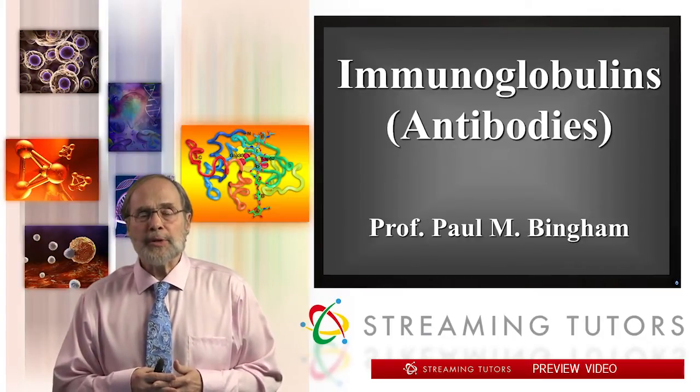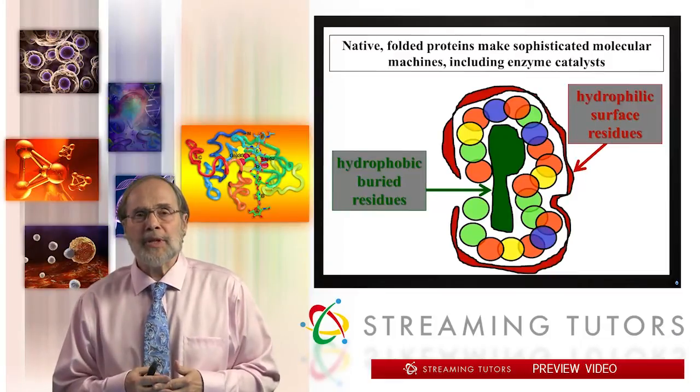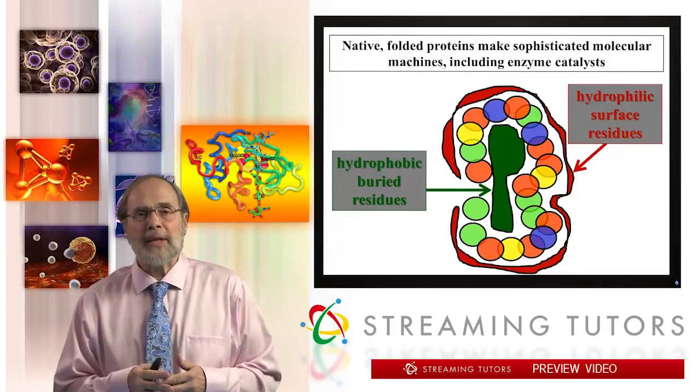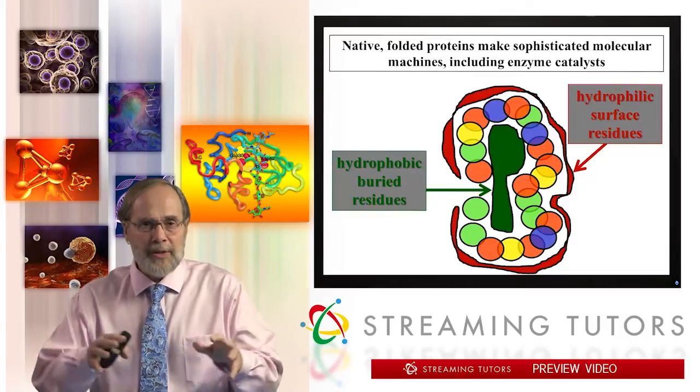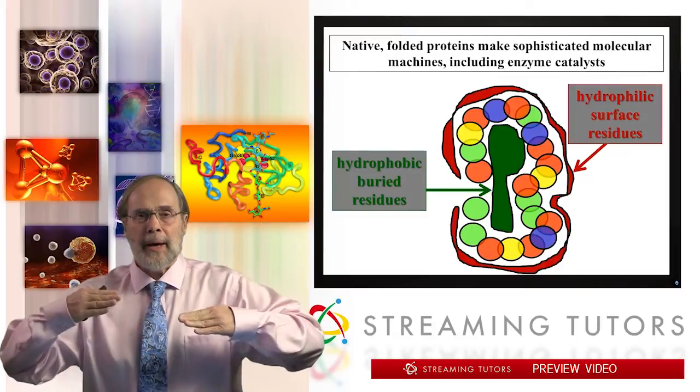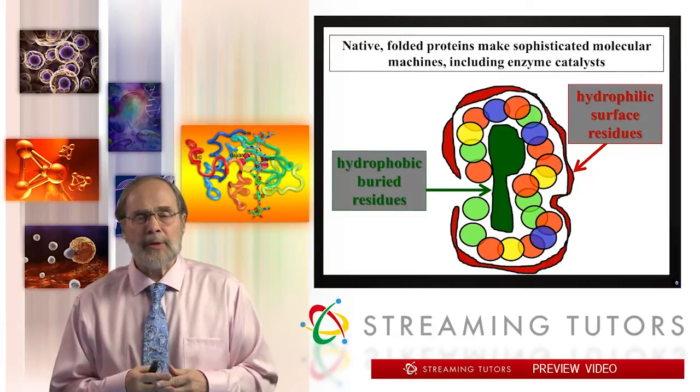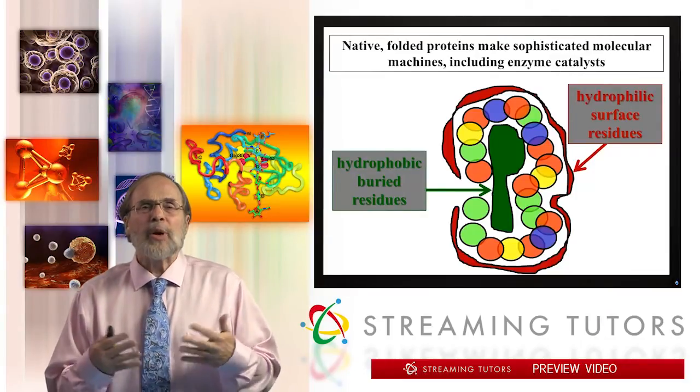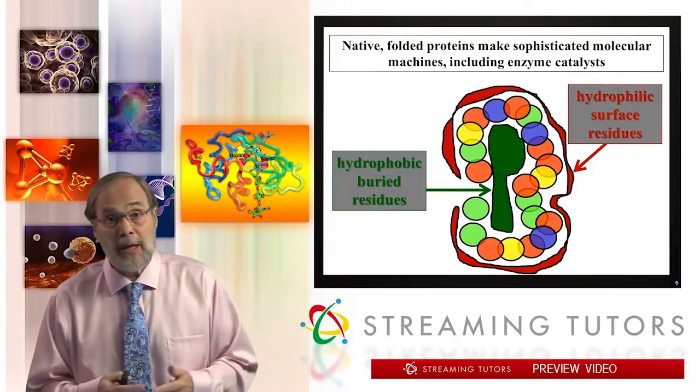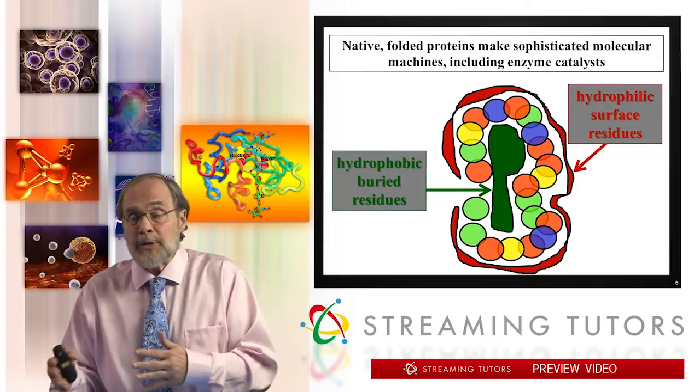We're going to approach these as molecular machines. We saw in a previous segment that proteins don't make just catalytic enzymes. They also make molecular machines that do things we saw in the case of myosin, for example, cranking the contractile movement of muscle fibers with respect to one another. Antibodies are another example of a very different kind of molecular machine that does some really interesting things and does them in a really interesting way.